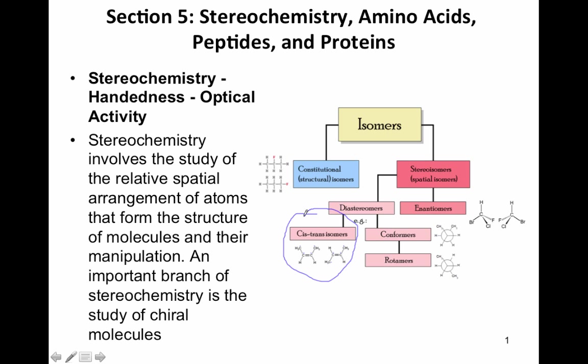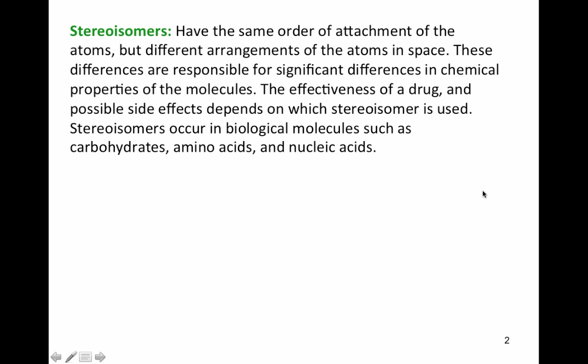Here's the new part. To the right of the screen, where it says enantiomers, these are the new stereoisomers we'll be talking about. Enantiomers are mirror images of each other. It's probably best for you to make some models using your model kit so you can understand this section more easily. Stereoisomers have the same order of attachment of atoms but different arrangements in space, and these differences are responsible for significant differences in chemical properties.